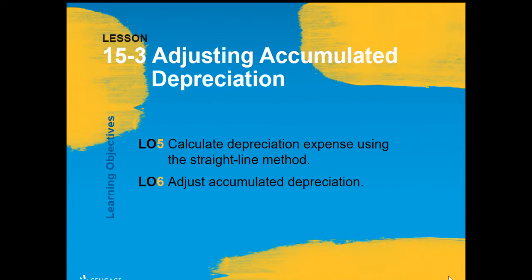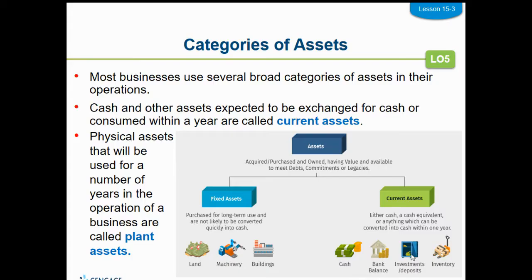We're going to talk about accumulated depreciation and how you do the adjustment for that transaction. First of all, we have to talk about different categories of assets. A lot of companies have different categories of assets.